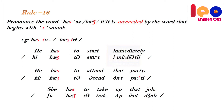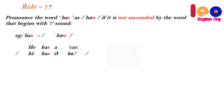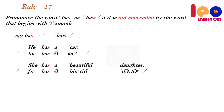Rule 17: Pronounce 'has' as 'has', not 'haz', if it is not followed by a word that begins with a 't' sound. Example: 'he has a car' — after 'has', the 't' sound is not there, so 'has' must be pronounced as 'has' only. He has a car. She has a beautiful daughter. It has a long tail.